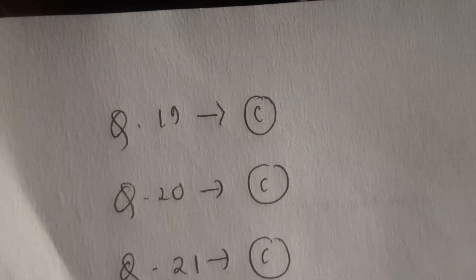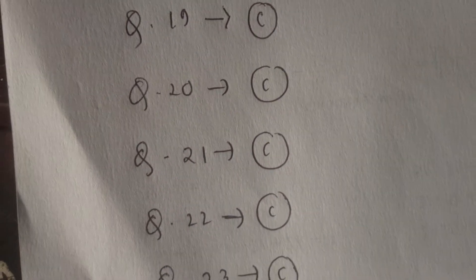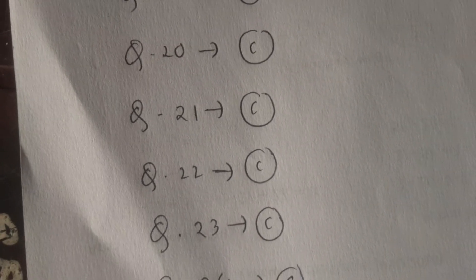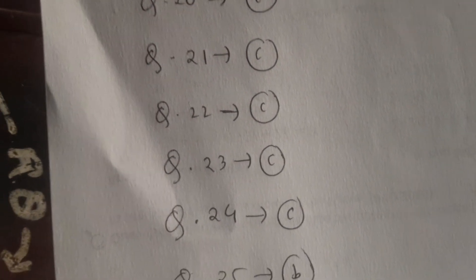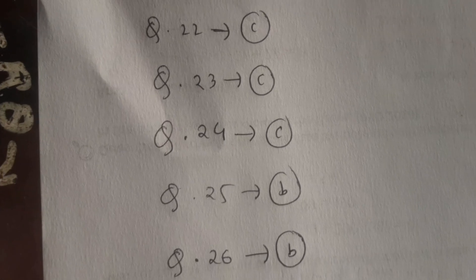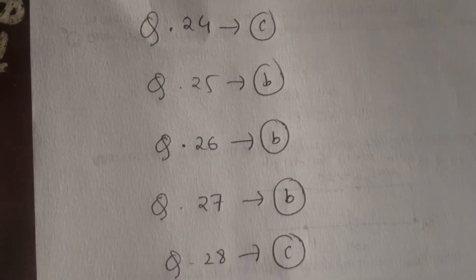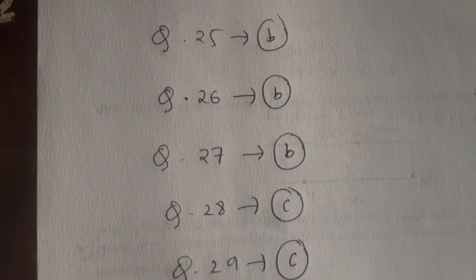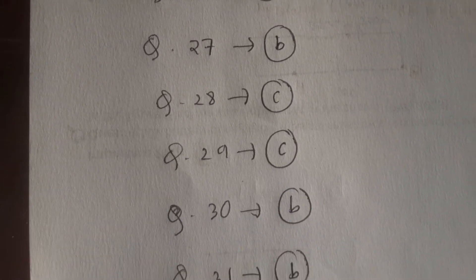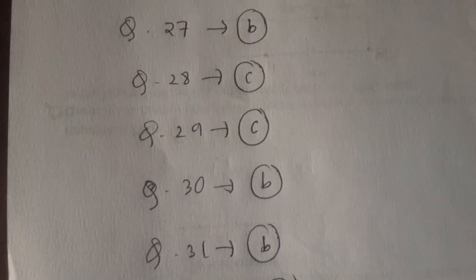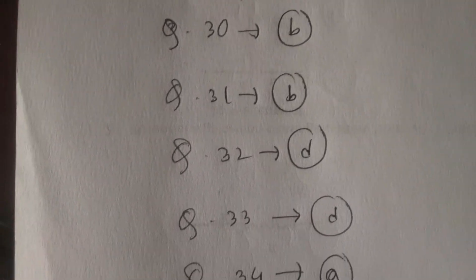Question number 19 is C. Question number 20 is C. Question number 21 is C. Question number 22 is C. Question number 23 is C. Question number 24 is C. Question number 25 is B. Question number 26 is B. Question number 27 is B. Question number 28 is C. Question number 29 is C. Question number 30 is B.